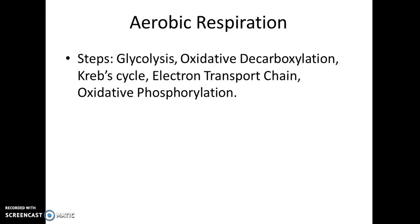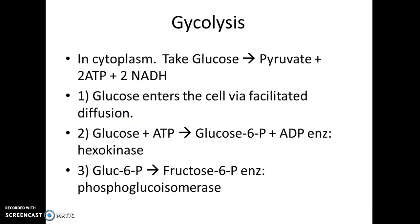In aerobic respiration, there are five steps: glycolysis, oxidative decarboxylation (ox decarbox), the Krebs cycle, the electron transport chain, and oxidative phosphorylation (oxphos). We are going to start off with glycolysis, and we're going to do that in the next screencast. Hopefully you're all set, and this helped.